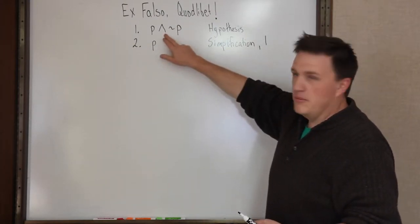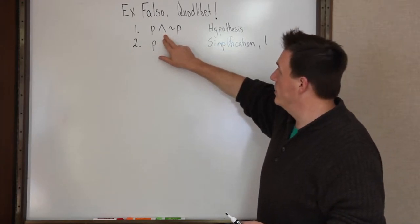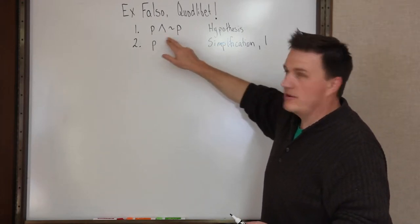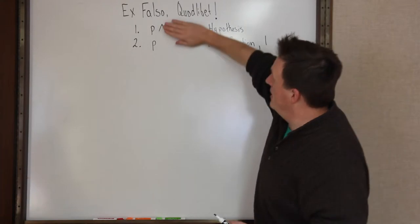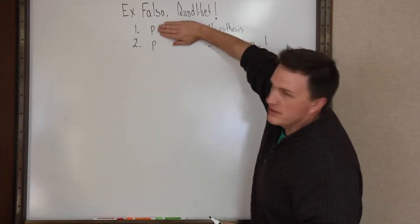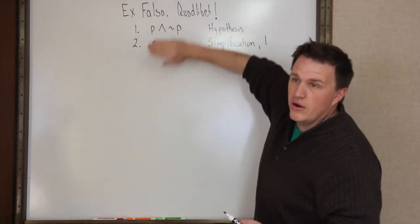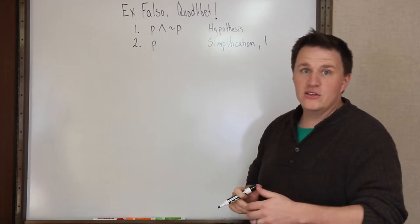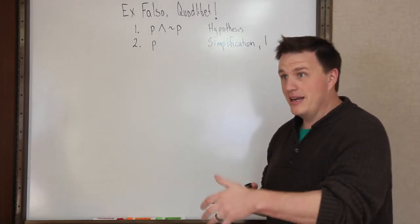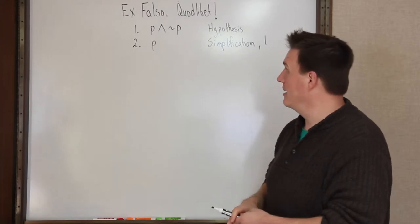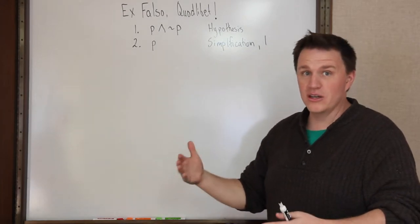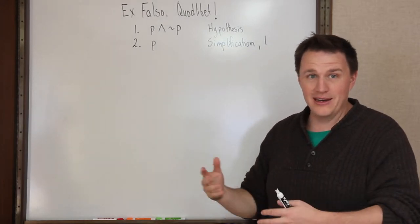Now, this symbol means and, so if both halves of the sentence are true, then you know for sure that at least one half of the sentence is true. So if I say to you, it is Tuesday and it is raining, you know for sure that it is Tuesday is true. You can derive that from it is Tuesday and it is raining.